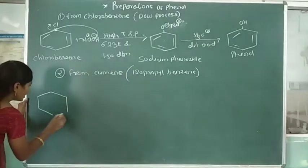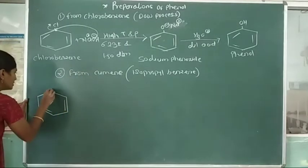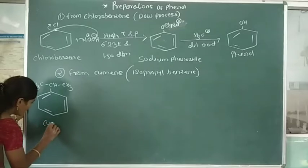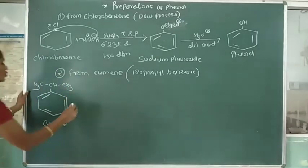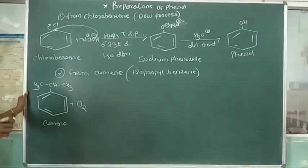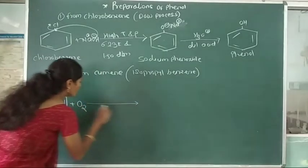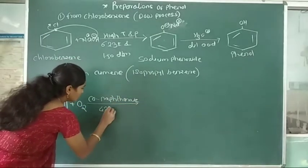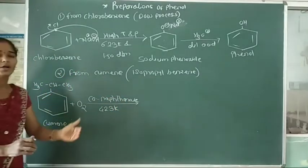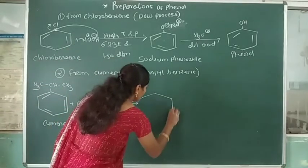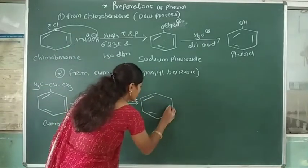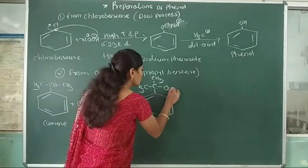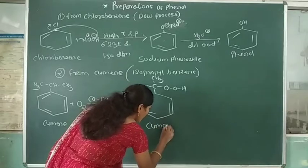Cumene, or isopropylbenzene, has the structure where an isopropyl group (CH(CH₃)₂) is attached to the benzene ring. On air oxidation, cumene reacts with oxygen using cobalt and naphthalene as catalyst at 423 K temperature. The oxygen adds to the tertiary carbon to form cumene hydroperoxide, which has a —C(CH₃)₂—OOH group.